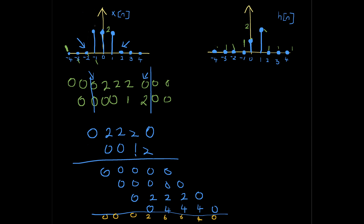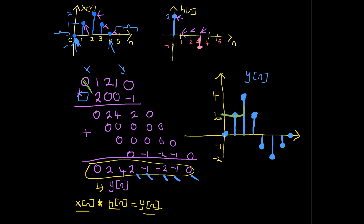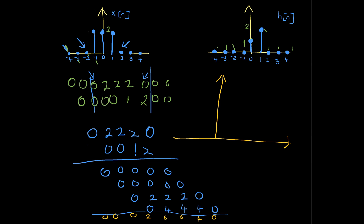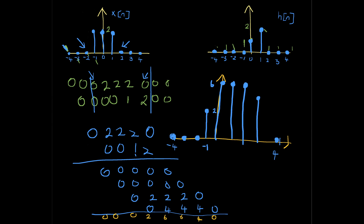Then you add, and that gives you: zero, zero, zero, zero, two, six, six, four, zero. Now translate that to a graph. The X[n] first value starts from negative four, so our Y[n] is also going to start from negative four and go up to four: zero, zero, zero, two, six, six, six, four, zero. Alright guys, that will be the end of this video. If you have any questions please leave them in the comment section below, and have a nice day — peace!